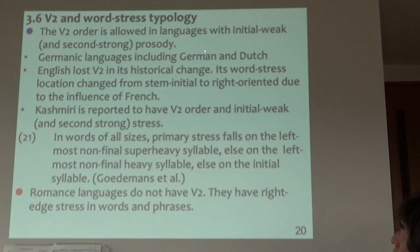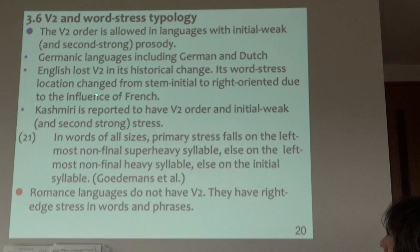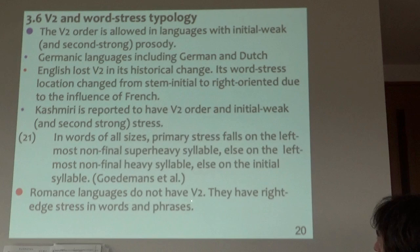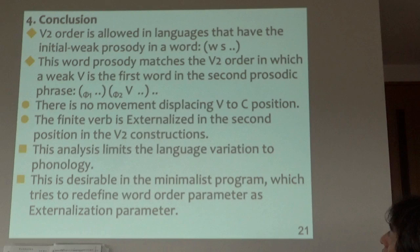Here is the V2 and word stress typology. The V2 order is allowed in languages with initial weak and second-strong prosody. Germanic languages including German and Dutch have this. English lost V2 in a historical change — its word stress location changed from stem-initial to right-oriented, due to French influence. Kashmiri, an Indian language, is reported to have V2 order and initial weak stress. Romance languages do not have V2 because they have right-edge stress in words and phrases.